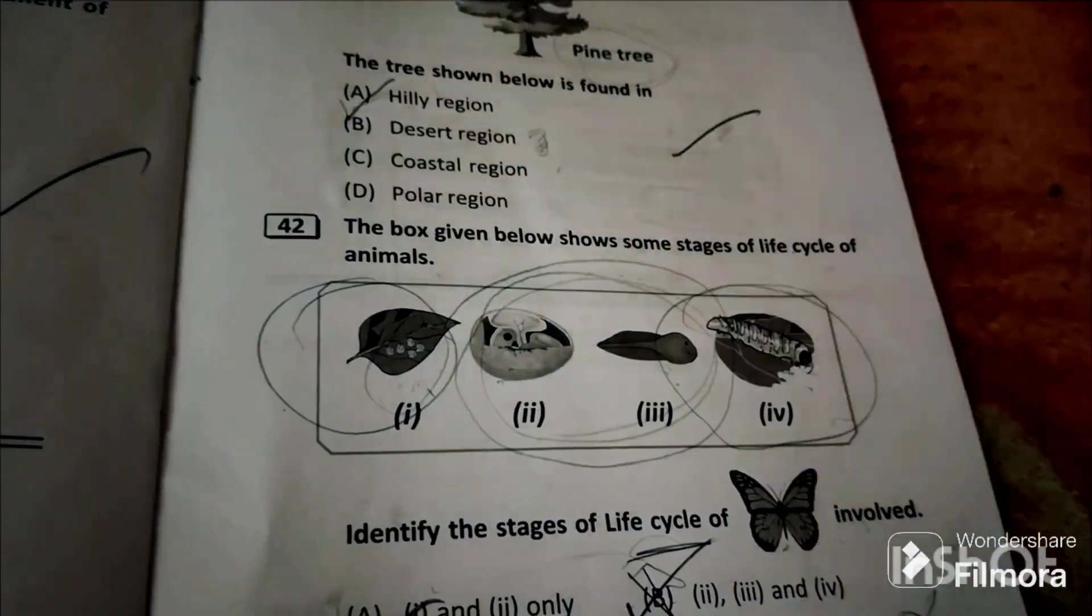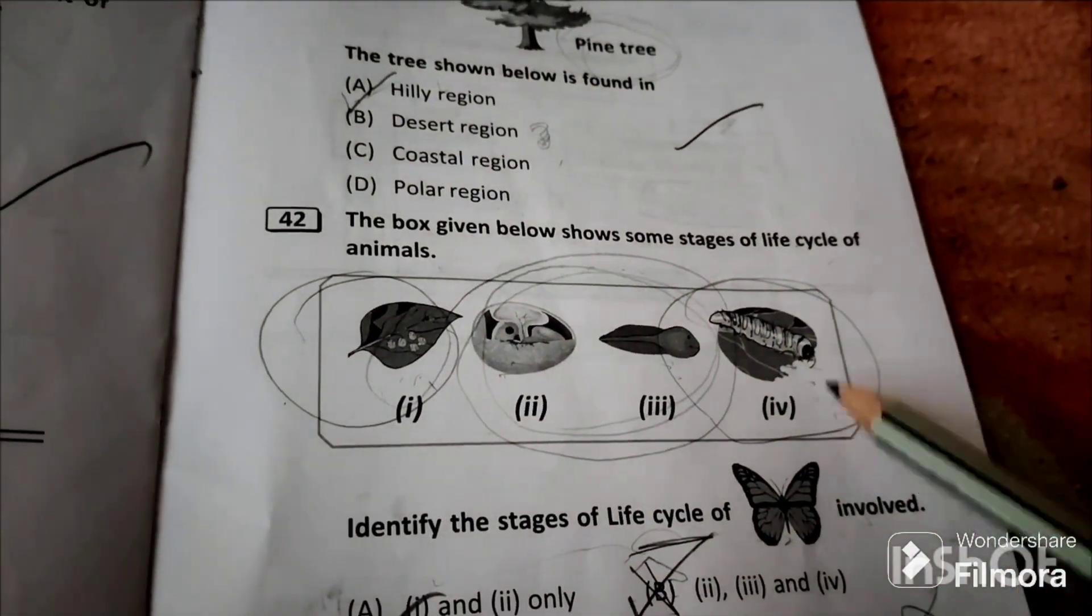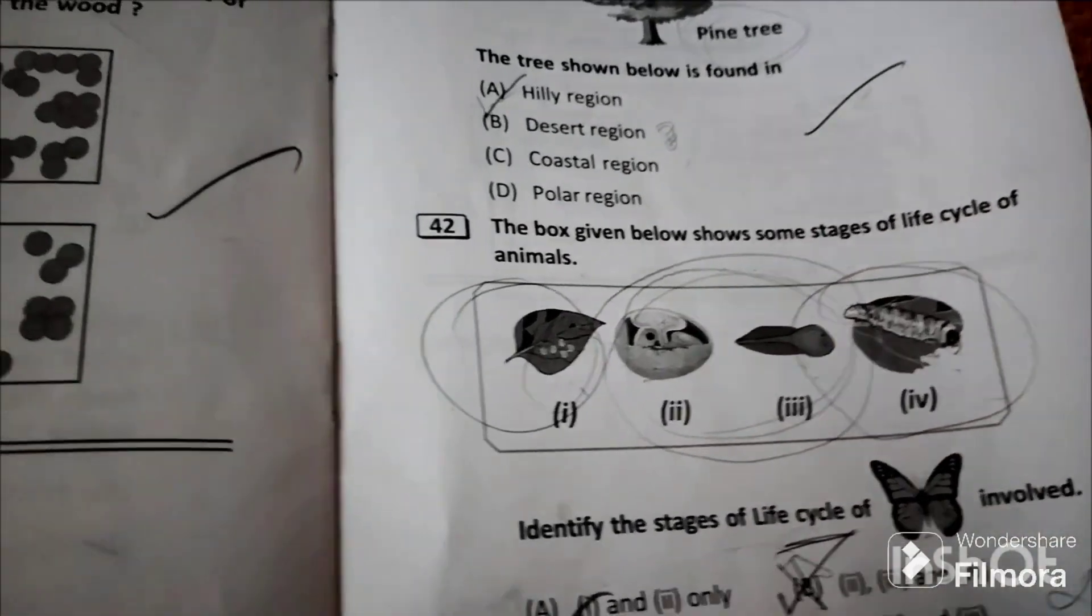Egg, this one is the pupa stage of caterpillar, and four is the larva stage of caterpillar.